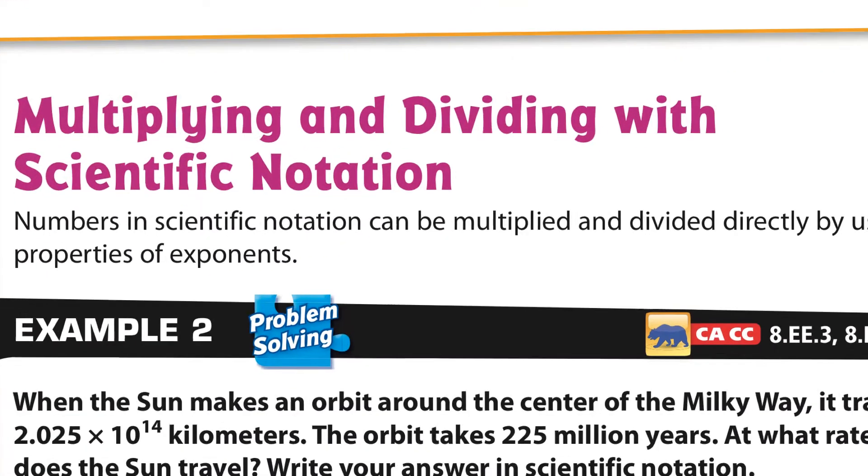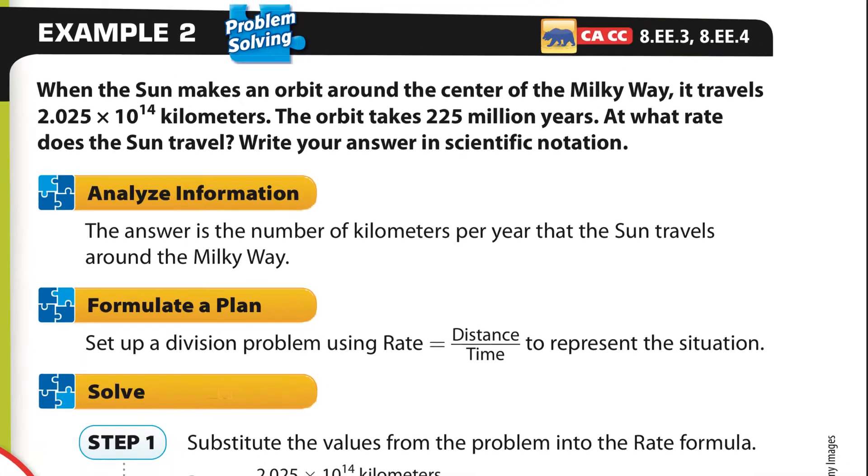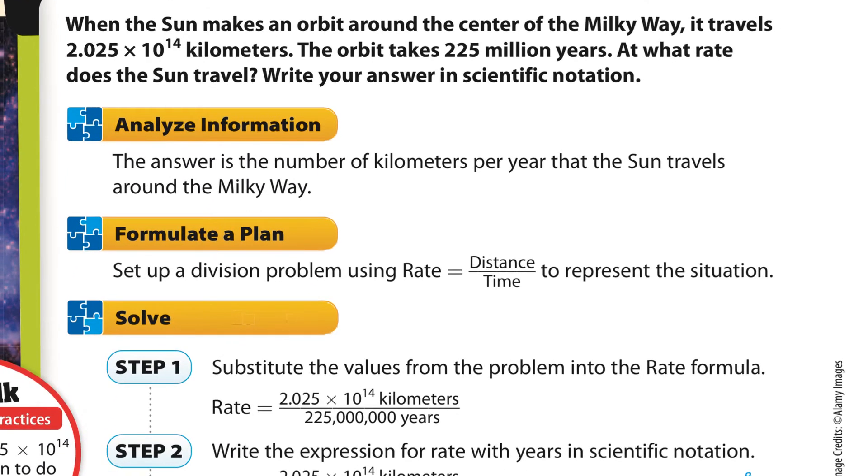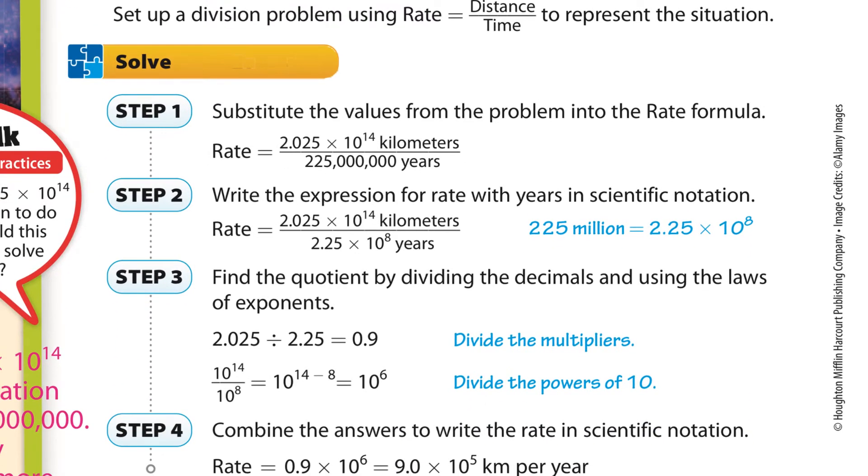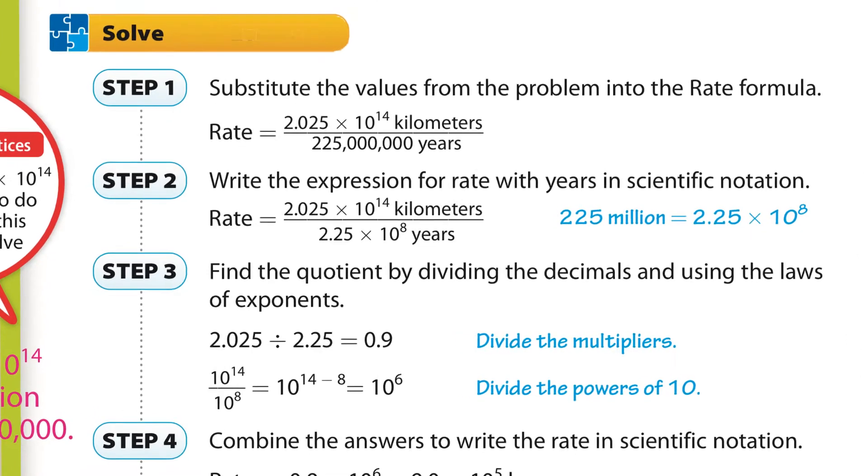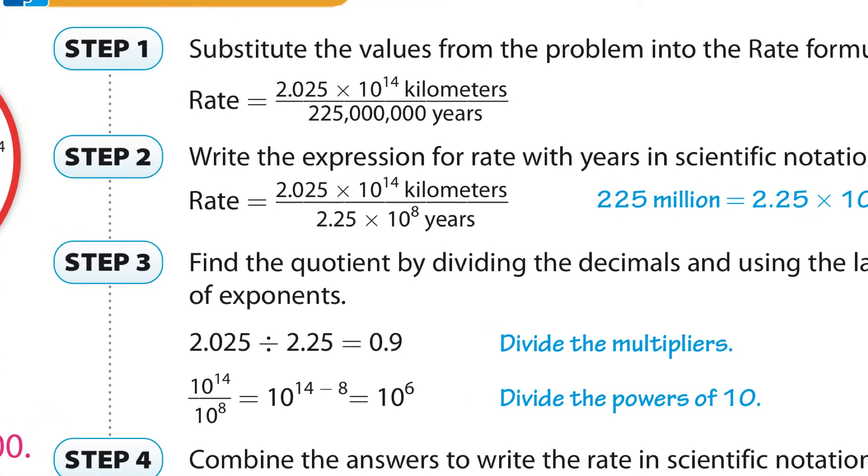So we're going to multiply now and divide with scientific notation. And when we multiply or divide, we have the situation where the sun makes an orbit around the center of the Milky Way. It travels that many kilometers. The orbit takes 225 million years. At what rate does it travel? Looks like rate is distance divided by time. So the distance is kilometers divided by 225 million years.